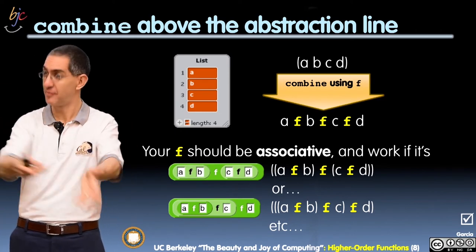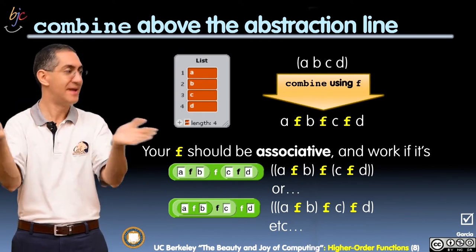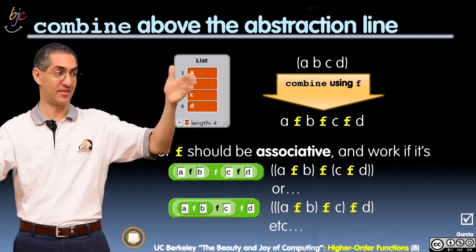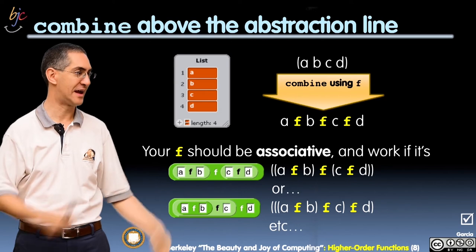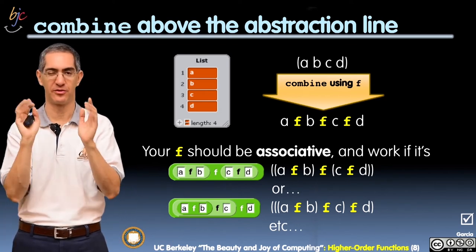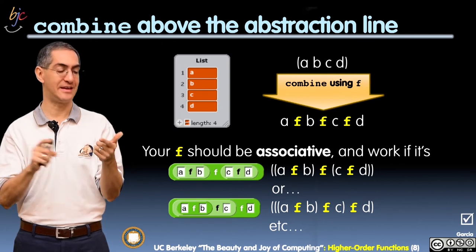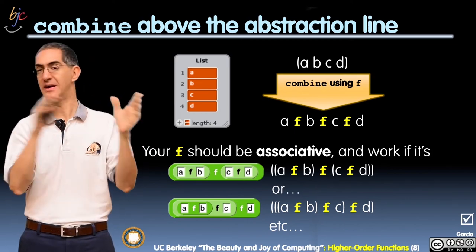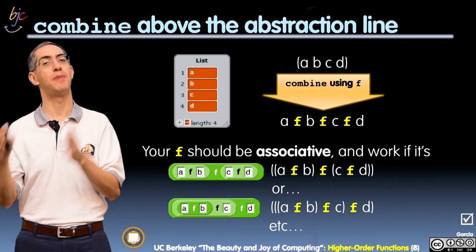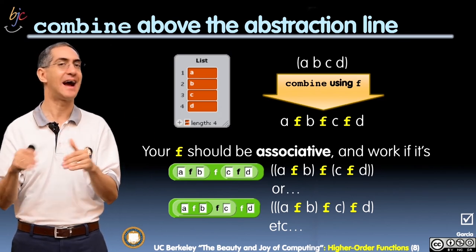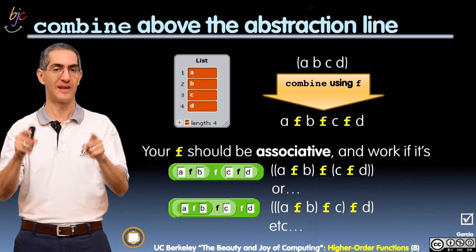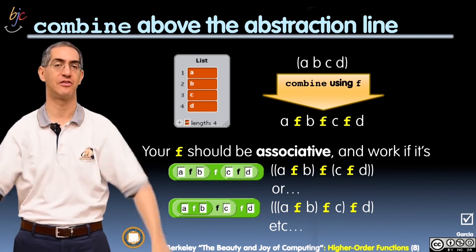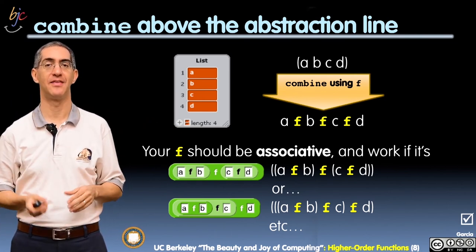You can write other, more interesting functions too — we'll do some together. Also, join with a comma between elements works, as does join with any separator. Join with a carriage return takes a list and puts items on different lines — that also works naturally with COMBINE. So that's COMBINE. We've seen the motivation for higher-order functions, reviewed how they work, and looked under the hood at COMBINE — but now close the hood. Think about COMBINE above the abstraction line. Next time we'll talk about the acronym project.